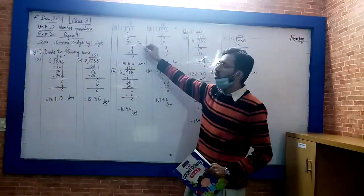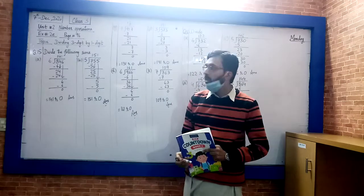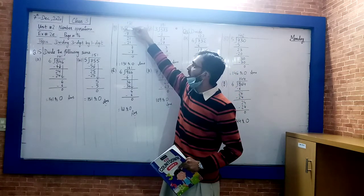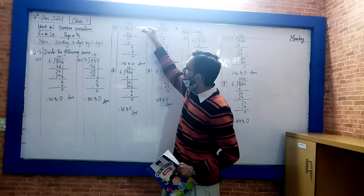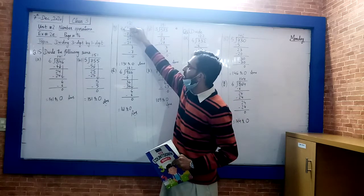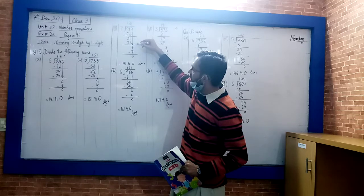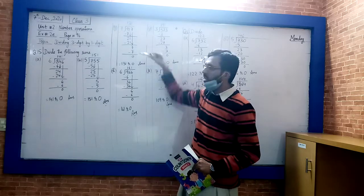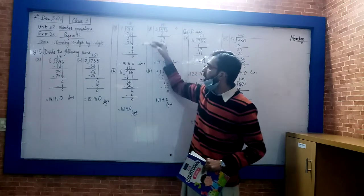Next part is G: 917 divided by 7. The first digit is 9. 9 divided by 7 is 1. 9 minus 7 is 2, and the next number comes down making 21. 21 divided by 7 is 3. 7 comes down making 7. 7 divided by 7 is 1. So the answer is 131, remainder 0.